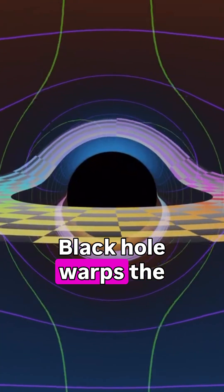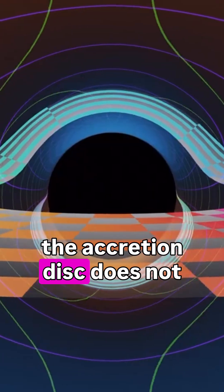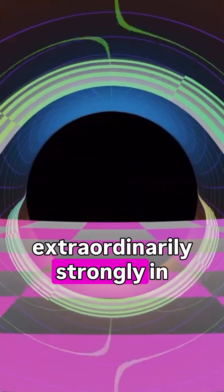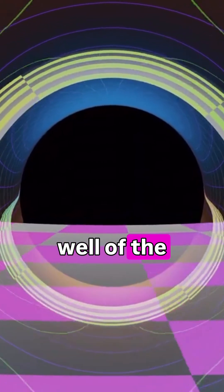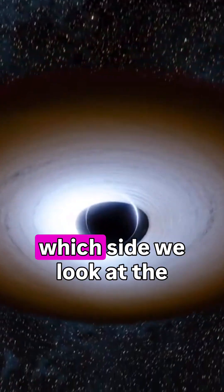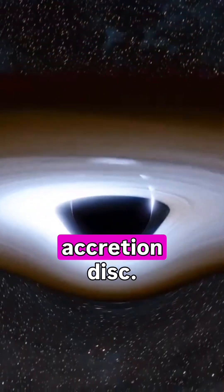A black hole warps the space around itself so intensely that the light from the accretion disk does not travel to us in a straight line. It is refracted extraordinarily strongly in the gravitational well of the black hole, and as a result, regardless of which side we look at the hole from, we will see the light from its accretion disk.